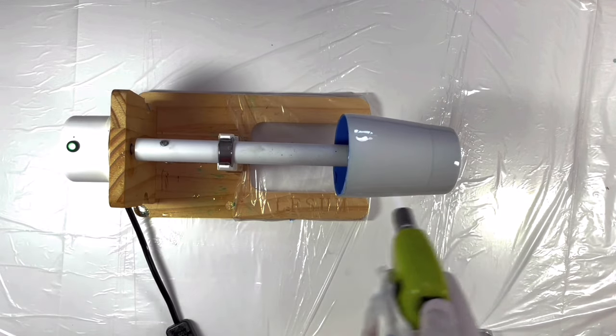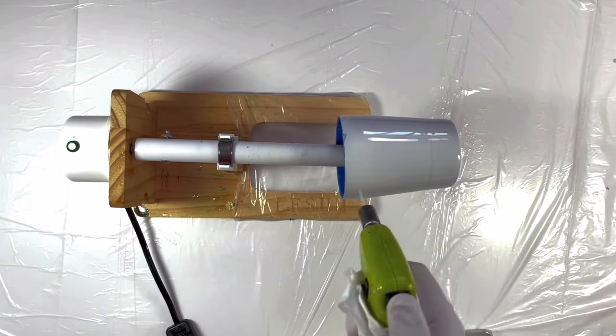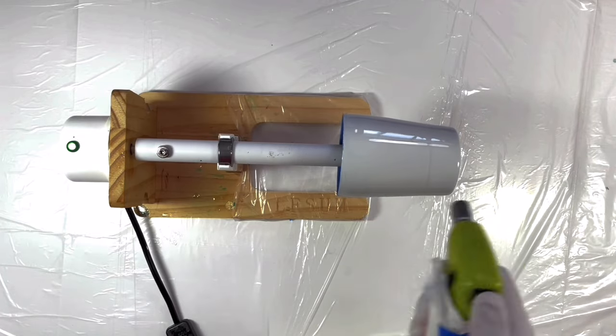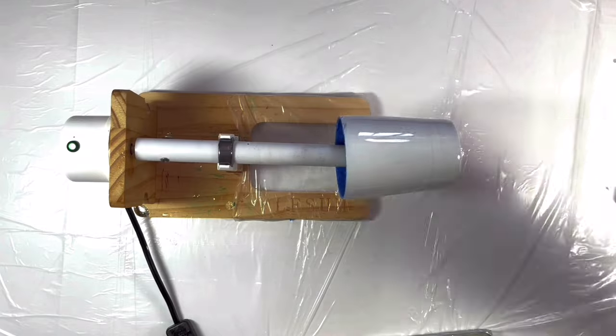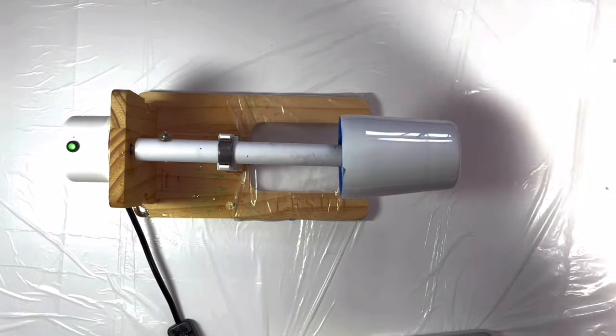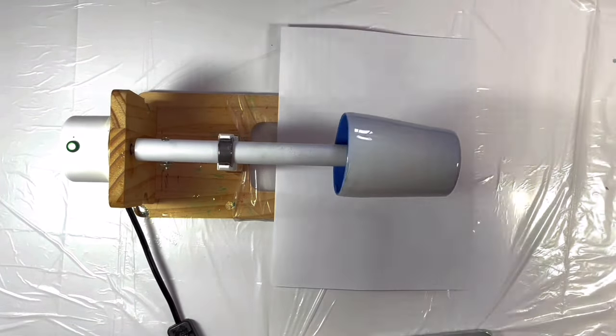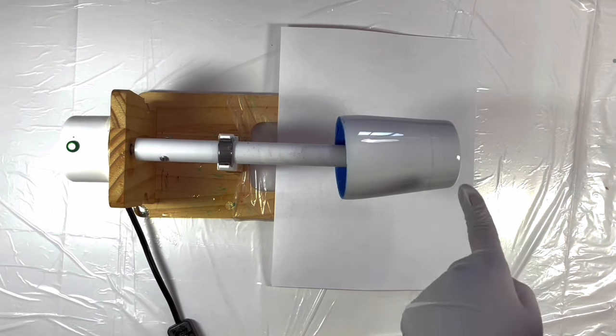Pop up the air bubbles in the resin using a blue torch. Before sprinkling the glitters, I prefer to place a paper below the tumbler to collect the excess glitters and reuse them.